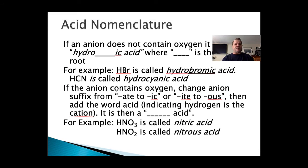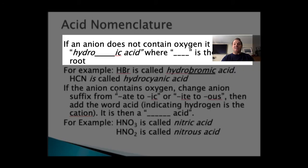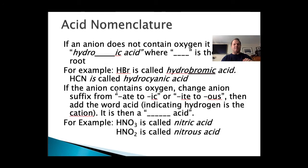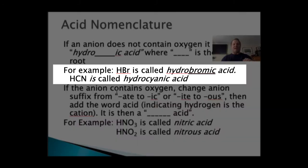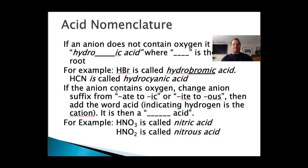Our acid nomenclature has got some kind of weird rules, but they don't change. Let's go through those. If the anion that the hydrogen is bonded to does not contain an oxygen, it will be hydro-blank-ic acid, where the blank is the anion root. For example, HBr is called hydrobromic acid. The root is bromine, so it becomes bromic acid. HCN is called hydrocyanic acid. CN is the cyanide ion, so our root is cyanic. Hydrocyanic acid.